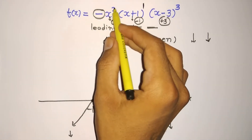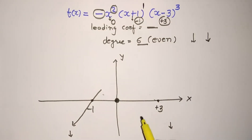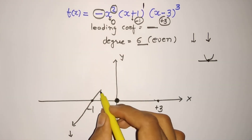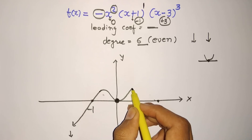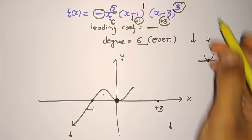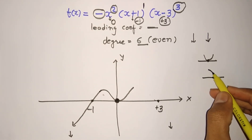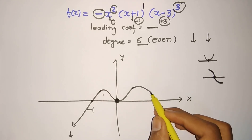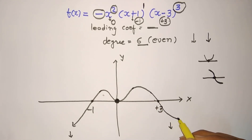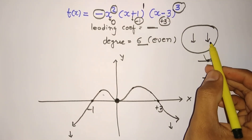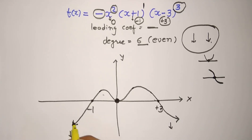At zero, the multiplicity is two, so it acts like a parabolic curve. For plus three, the multiplicity is three, so the graph acts like a cubic curve. Connecting zero and plus three with this kind of curve, the polynomial has both ends negative — your starting point is negative and your ending point is also negative.